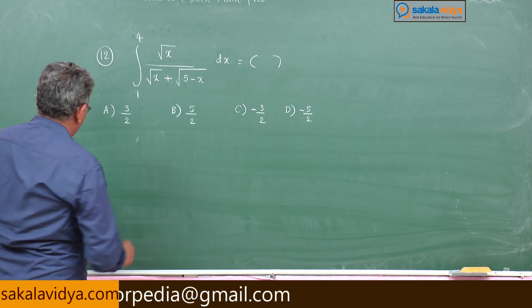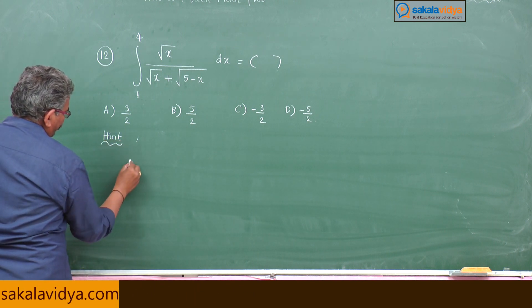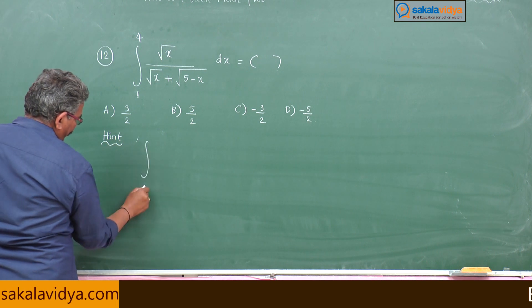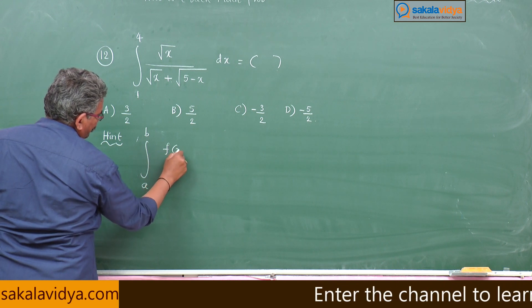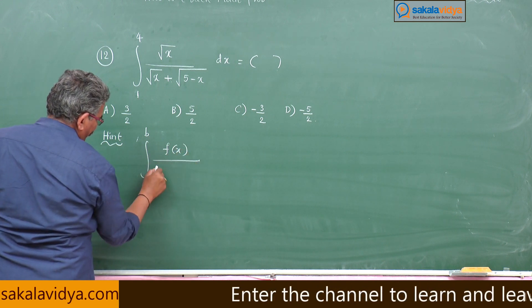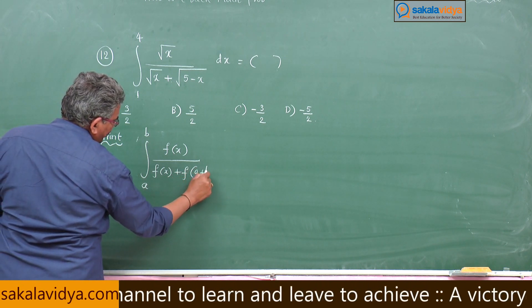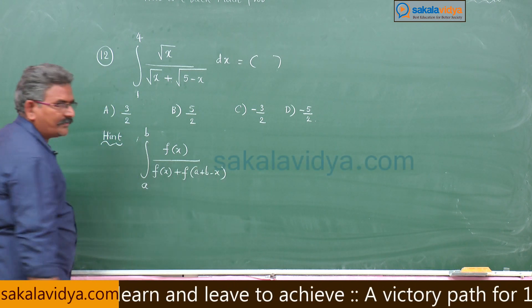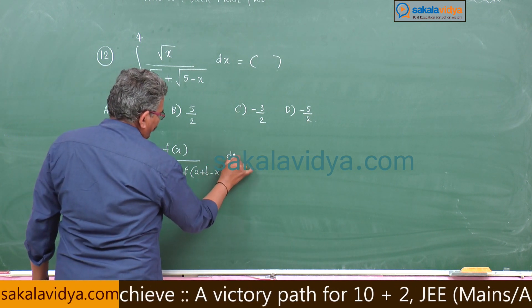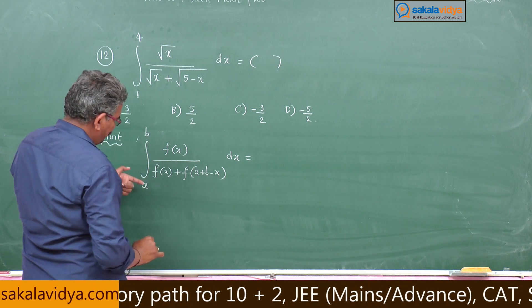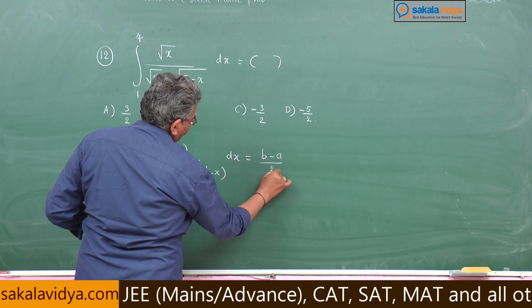Let us formulate it here. Hint: integral a to b f of x by f of x plus f of a plus b minus x dx, this is equal to upper limit minus lower limit by 2.